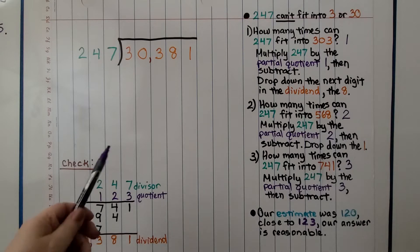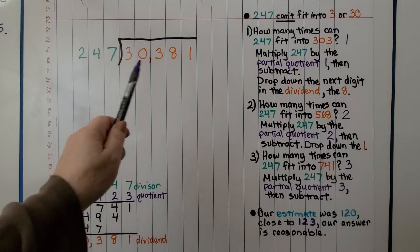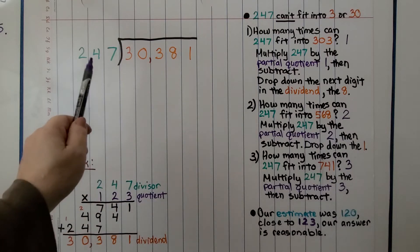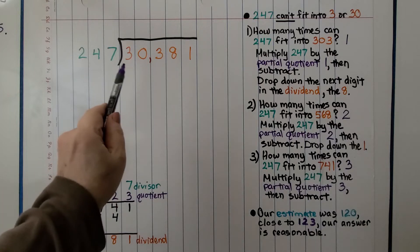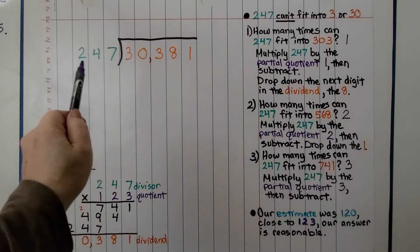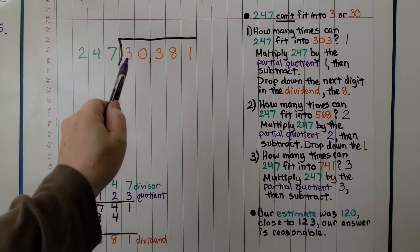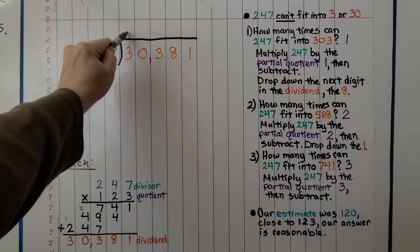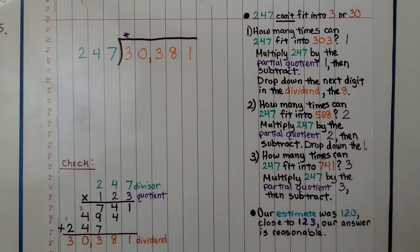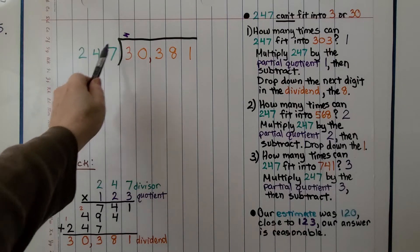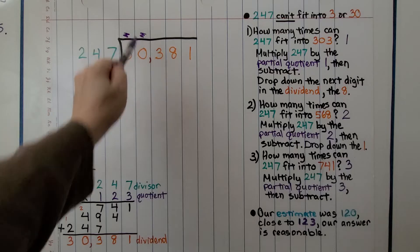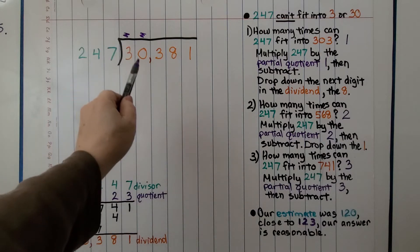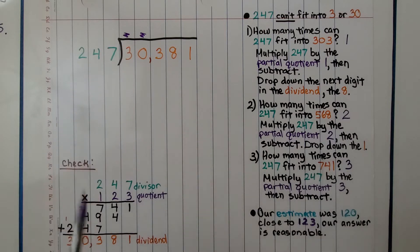We have our long division problem written. Here's our dividend, 30,381. We're going to see how many times 247 can fit into the dividend. We look at the first digit, and 247 can't fit into 3, so we're not putting anything above that 3. And 247 can't fit into 30 either.